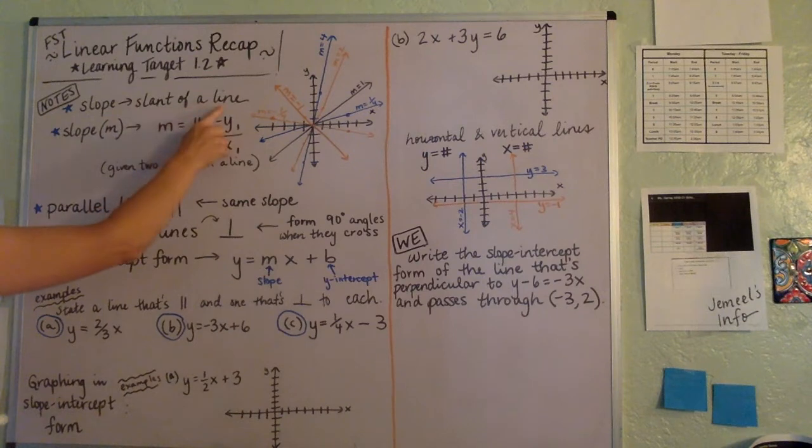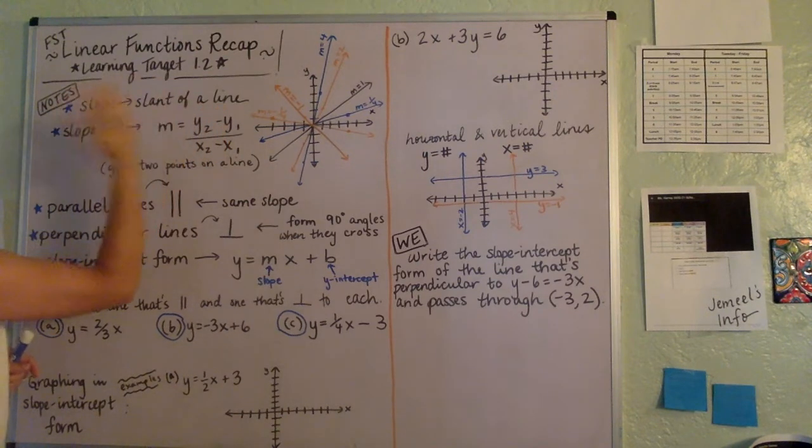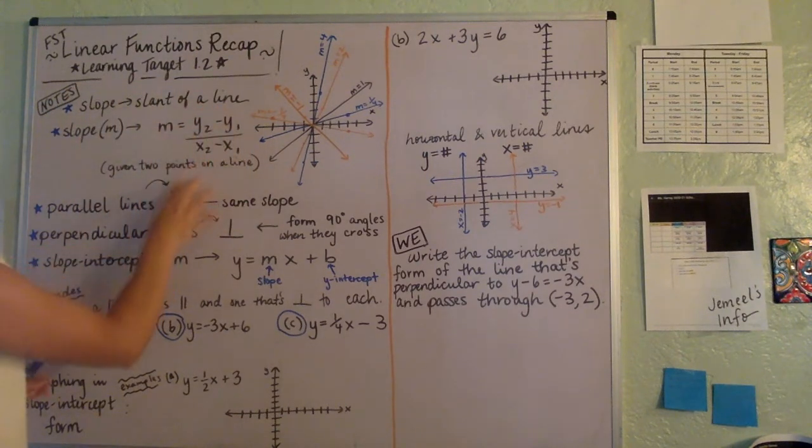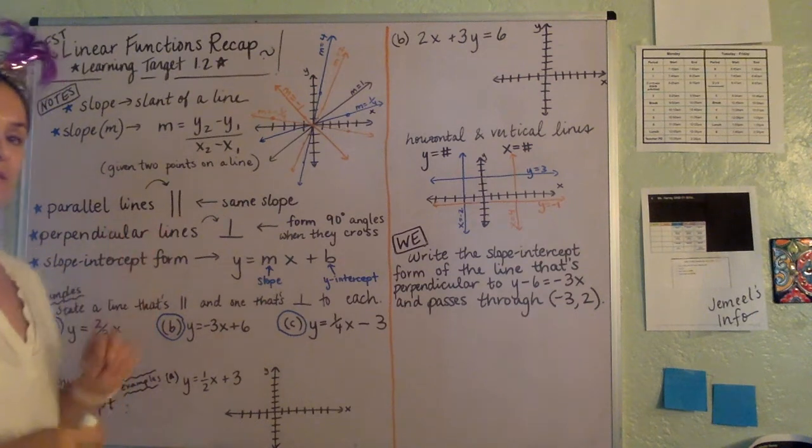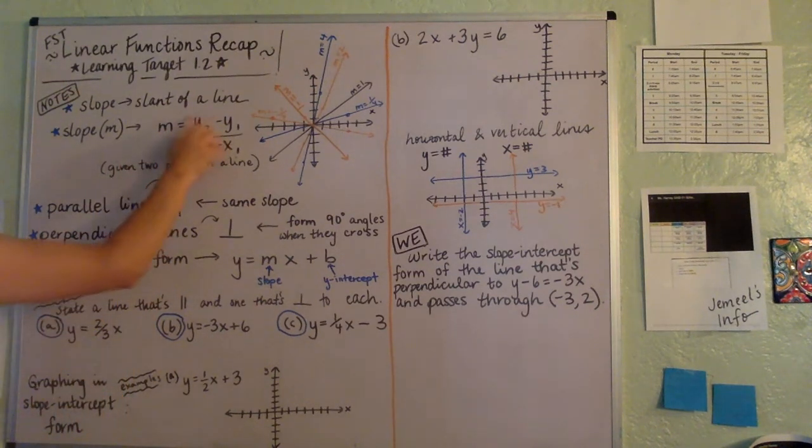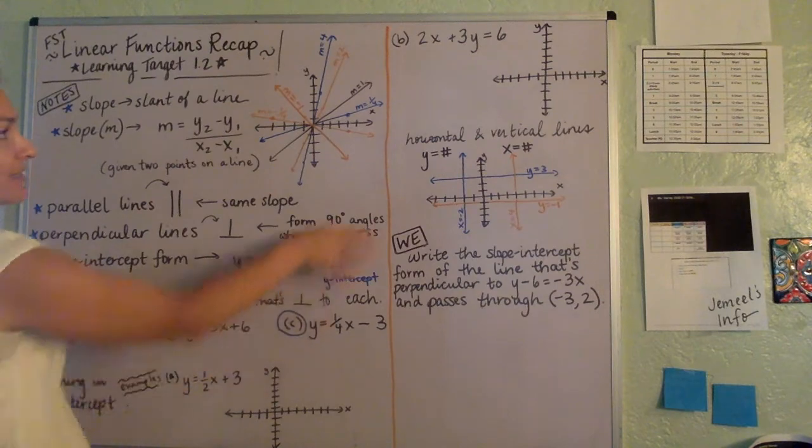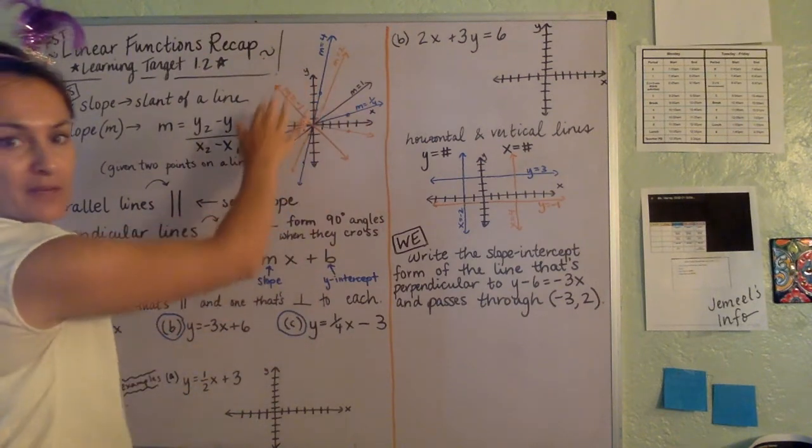So slope is the slant of a line, how much it tilts. The way that you can find a slope given two points that are on the line is this little formula. The change in the Y over the change in the X. Just want to remind you about slope here.